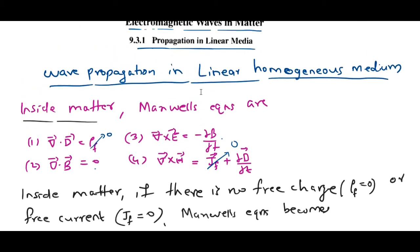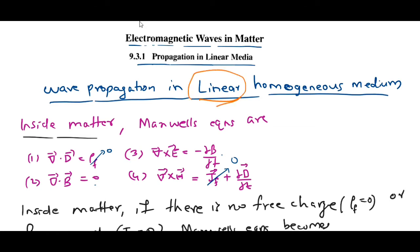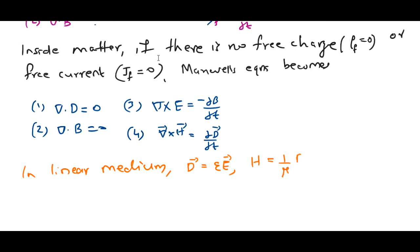Now, as mentioned in the title, what is the meaning of linear medium? In a linear medium, the displacement vector D will be equal to εE, and the magnetizing field H will be equal to B/μ.